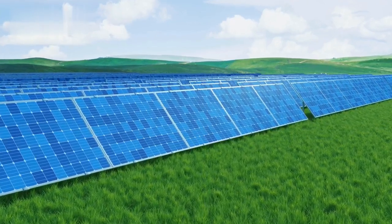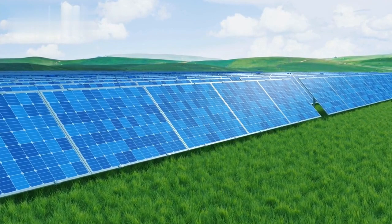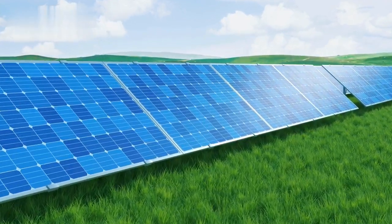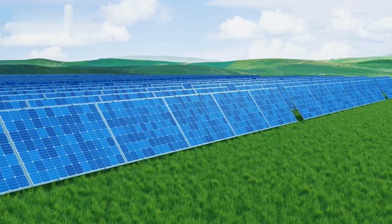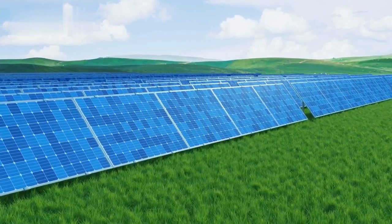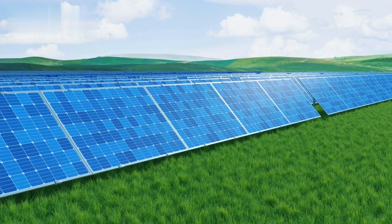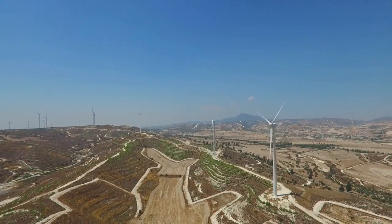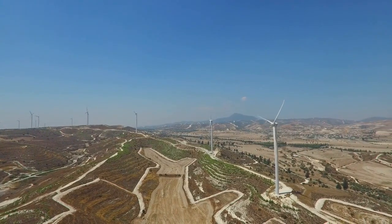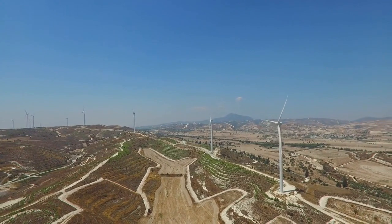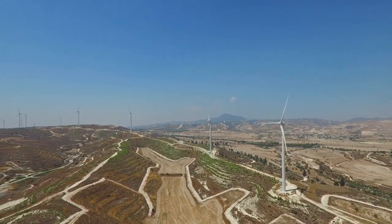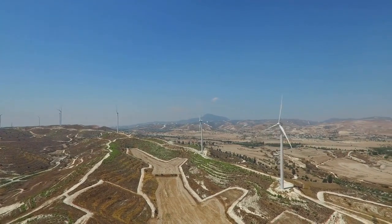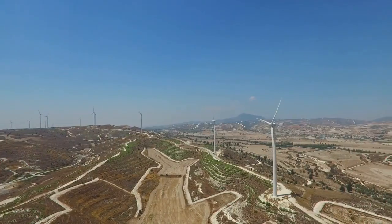Examples of green energy include solar energy. Solar panels capture sunlight and convert it into electricity. It is an incredibly clean energy source, producing no emissions during operation, and solar power systems can be scaled to meet various demands, from small household applications to large-scale industrial energy production. Wind energy: wind turbines convert the kinetic energy of wind into electrical energy. Like solar power, wind energy is clean and inexhaustible, though its availability can be variable depending on geographical locations.